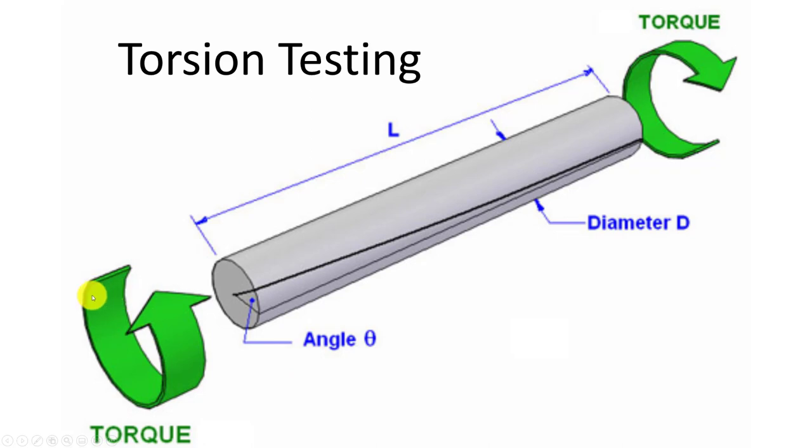Now what is torsion? We're going to be applying opposing torques on the different ends of a shaft at some length and diameter. When we do that, the shaft will twist at some deformed angle. This line will actually twist, and you're going to see this in lab.